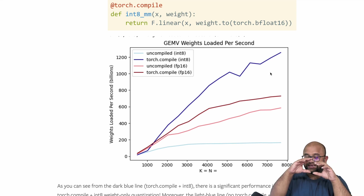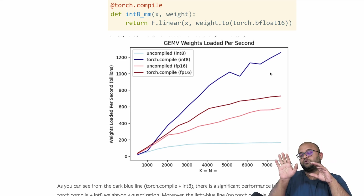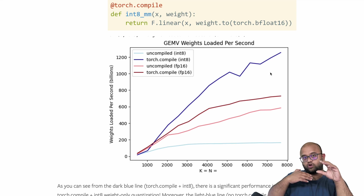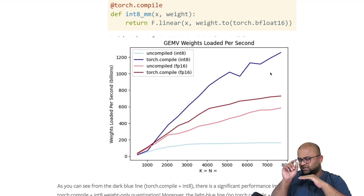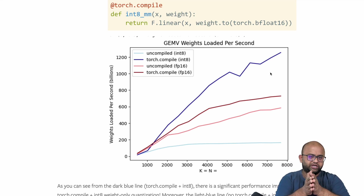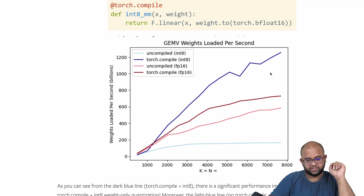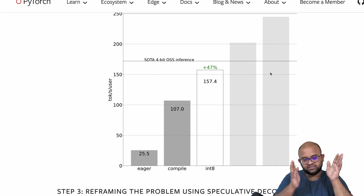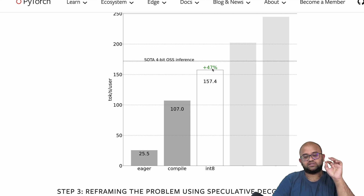torch.compile is able to generate custom kernels optimized for int8 fusion. They also applied the same approach with int4. With int8 there was little accuracy loss, but with int4 the training is more complicated — there are advanced approaches to handle it, and int4 achieves slightly better performance than int8. In industry, most production use cases use int8, while tools like Ollama use int4 as the default quantization technique. Applying int8 quantization yields a 47% improvement — 157 tokens per second on a single A100.